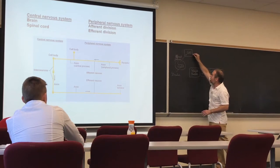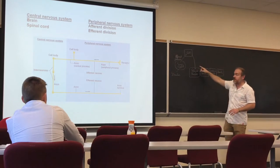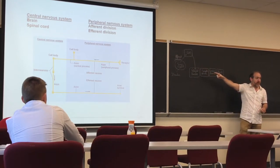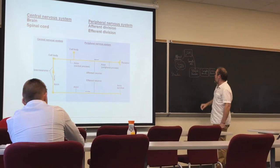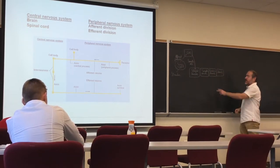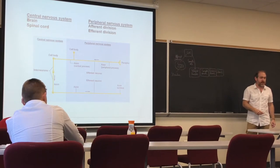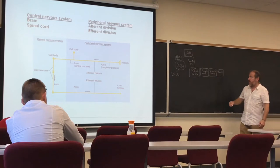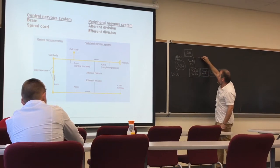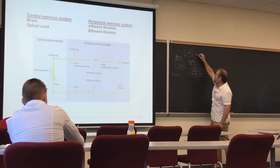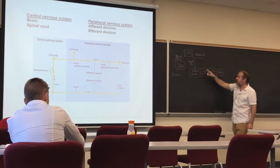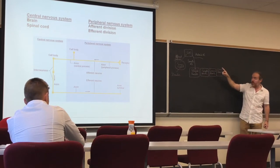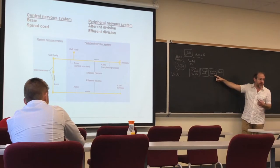When we want the signal to go to skeletal muscles, we're going to use the somatic nervous system. When we want the signal to go to smooth muscle, we use the autonomic nervous system. We also use the autonomic nervous system to send messages to cardiac muscle and to glands.